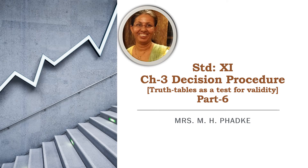Good afternoon. Today we are going to do Chapter 3 Decision Procedure Part 6, where we will be continuing with the previous exercise using truth tables as a test for validity of arguments. We already know that an argument is either valid or invalid. It is invalid when all the premises are true and the conclusion is false. When this condition of invalidity is found in any of the rows, the whole argument is invalid; when it is not found, it will be valid.